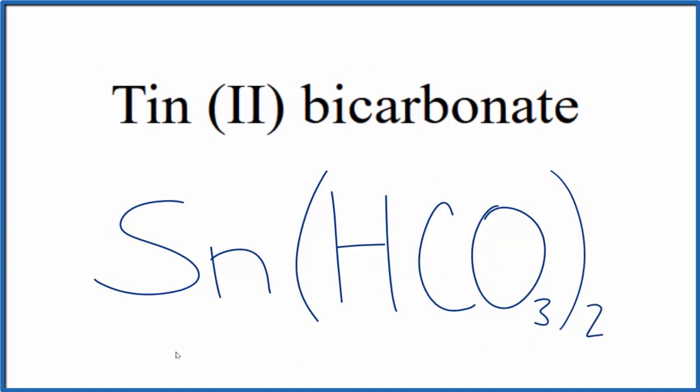If you were given this formula and asked to write the name, you'd need to know that this bicarbonate is 1-, and since you have 2 of them, the tin would be 2+, so we'd have tin (II).